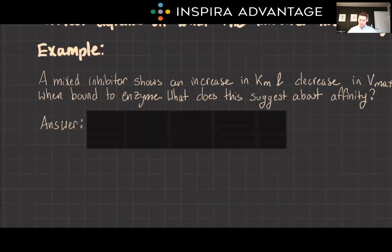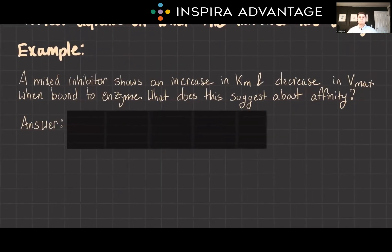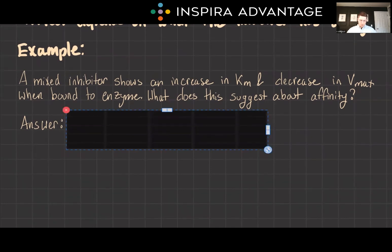To understand this, let's look at an example problem. A mixed inhibitor shows an increased KM and a decreased VMAX when bound to an enzyme. What does this suggest about its affinity? Well, this should suggest a higher affinity for the free enzyme, similar to a competitive inhibitor.